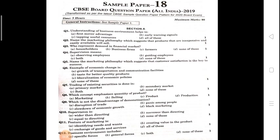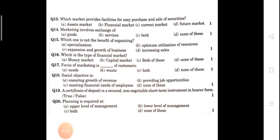Next: business environment includes specific force, general force, both, or none of these. And the next question: which market provides the facility for easy purchase and sale of securities? Options are asset market, financial market, current market, or future market. As we all know, the financial market provides the facility for easy purchase and sale of securities.